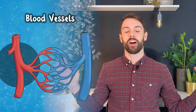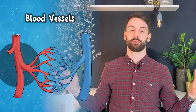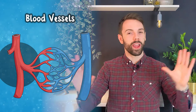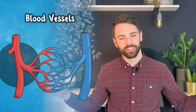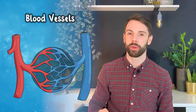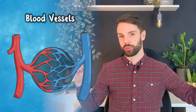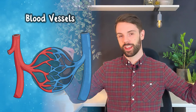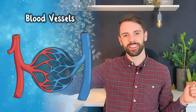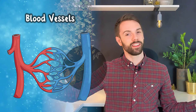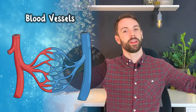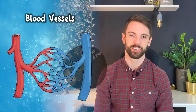Blood vessels are broken down into three parts: arteries, which take blood away from the heart; capillaries, which act as a bridge between the arteries and the veins; and veins, which bring blood back to the heart.